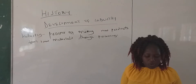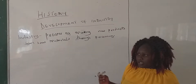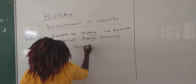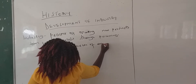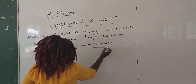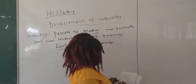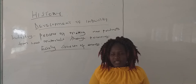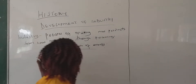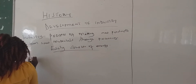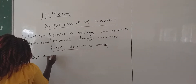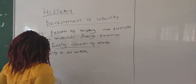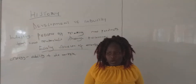You make new products from raw materials. Now let's look at the early sources of energy. Before we look at those early sources of energy, let's look at the definition of the term energy. Energy is the ability to do work.